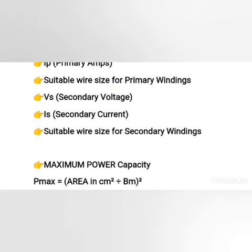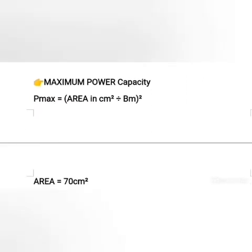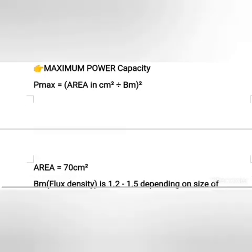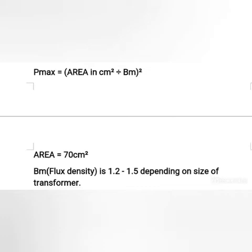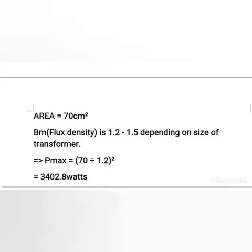The first on the list is the maximum power capacity of the welding transformer. The formula is: maximum power equals area in cm squared over flux density, all squared. We have our area at 70 cm squared, and the flux density range is usually between 1.2 to 1.5 depending on the size of the transformer. Using 1.2 for this particular welding transformer, maximum power equals 70 over 1.2, all squared, giving us approximately 3,400 watts — so 3.4 kilowatts.